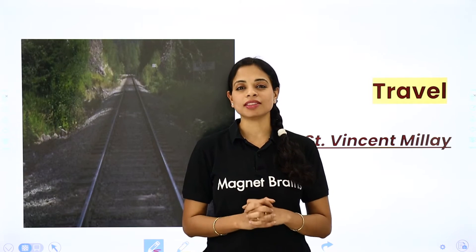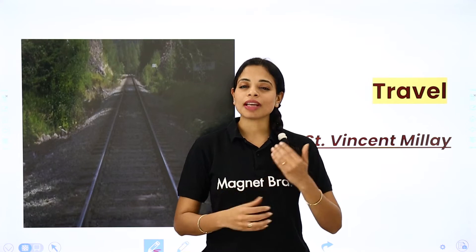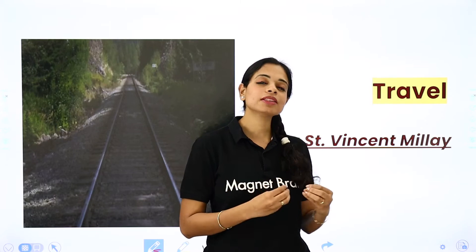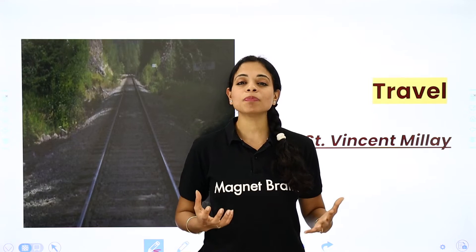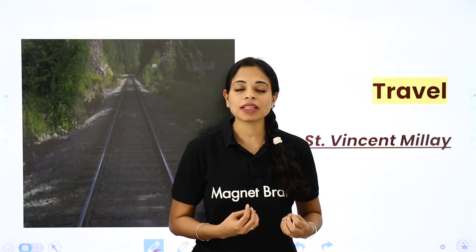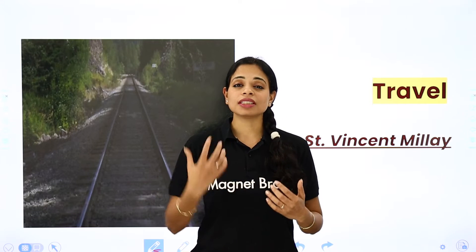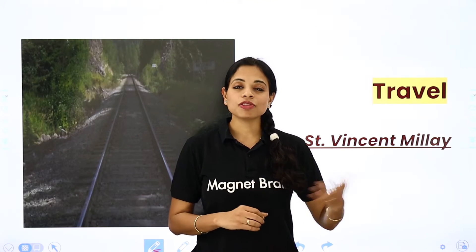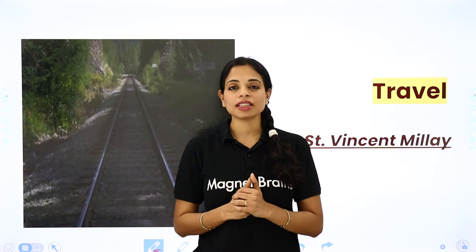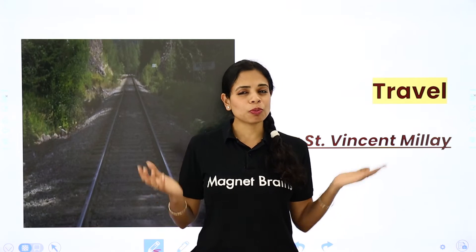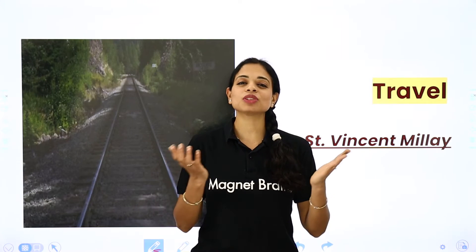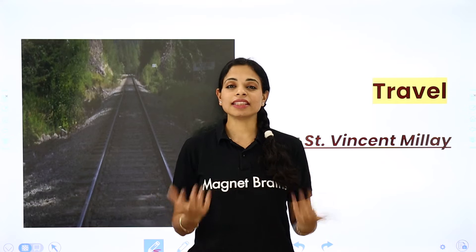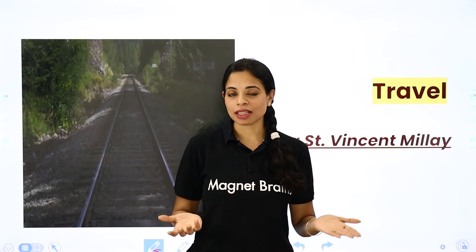Her heart longs deeply for travel. She wants to travel. Based on her poem, she tells her desire — how much she wants to travel. She imagines a train, but she doesn't have one. She doesn't have a platform either. But she wants to go and explore new things and meet new people.